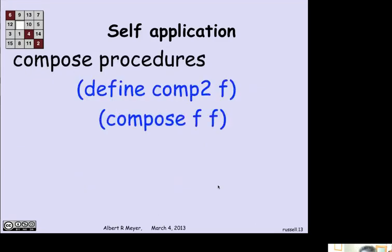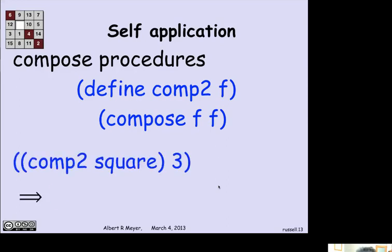OK, well, now let's define a compose it with itself operation. I'm going to call it comp 2. Comp 2 takes one function f, and the definition of comp 2 is compose f with f. And if I then apply comp 2 to square and 3, it's saying, OK, compose square and square. We just did that. That was the fourth power. Apply it to 3, I get 81.